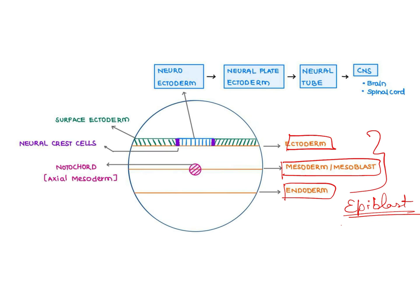The epiblast divides into the three germ layers by the third week of gestation, which is very important information. The endoderm is there, then we have the mesoderm. The notochord is derived from the axial mesoderm, which we have to remember.